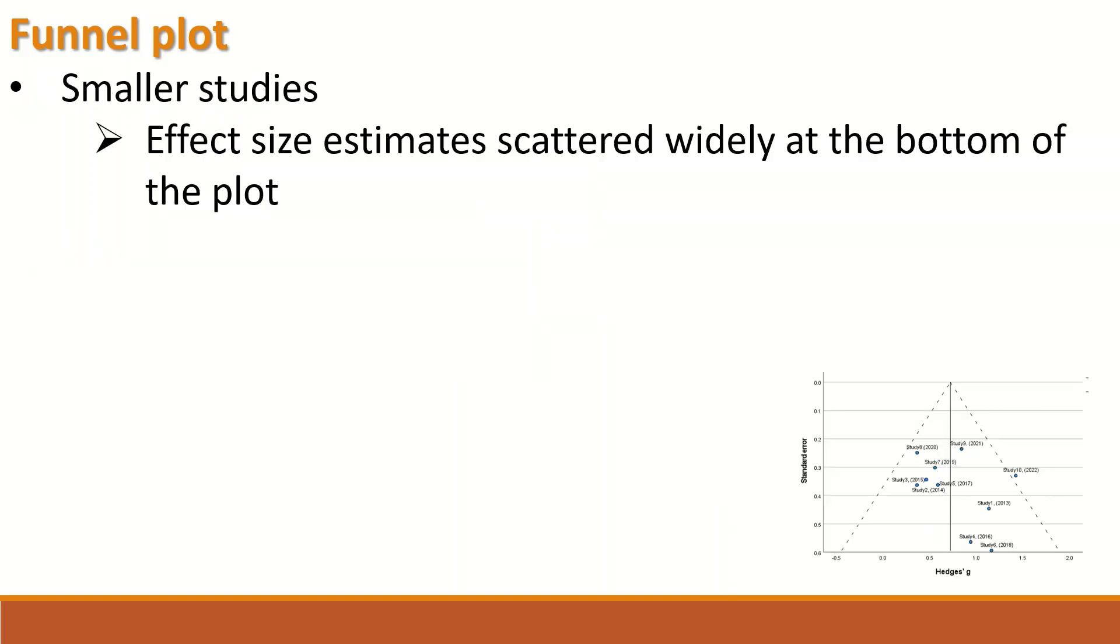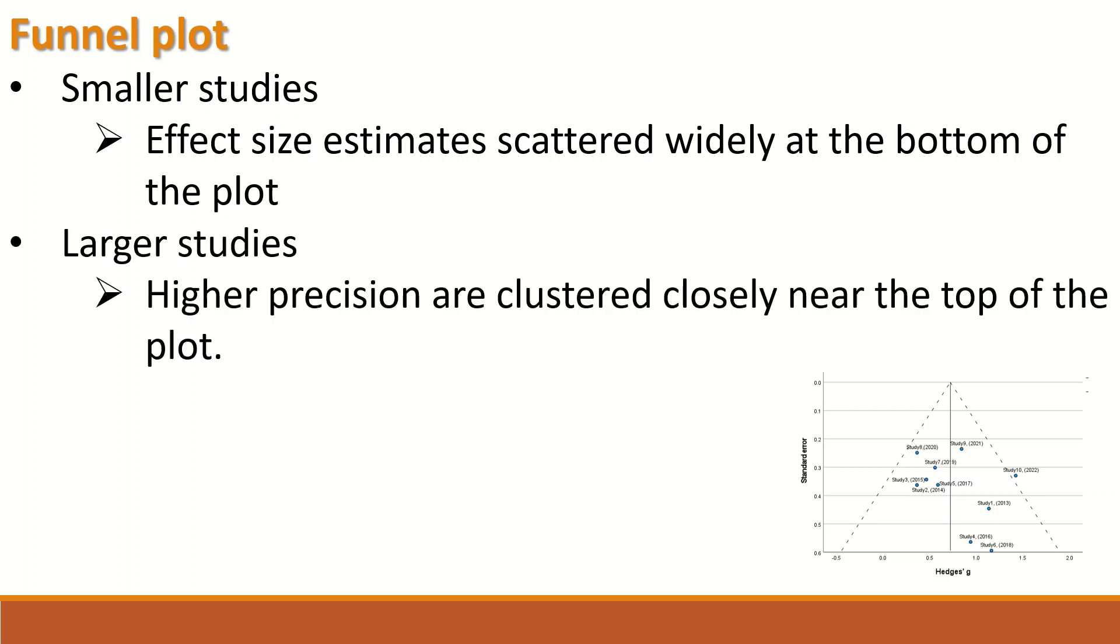In the plot, smaller studies that have an effect size estimate are usually scattered widely at the bottom of the plot. Larger studies will have higher precision and they are clustered closely to the top of the plot. So anything clustered here in that part indicates a larger study, and anything clustered or distributed here is for smaller studies.